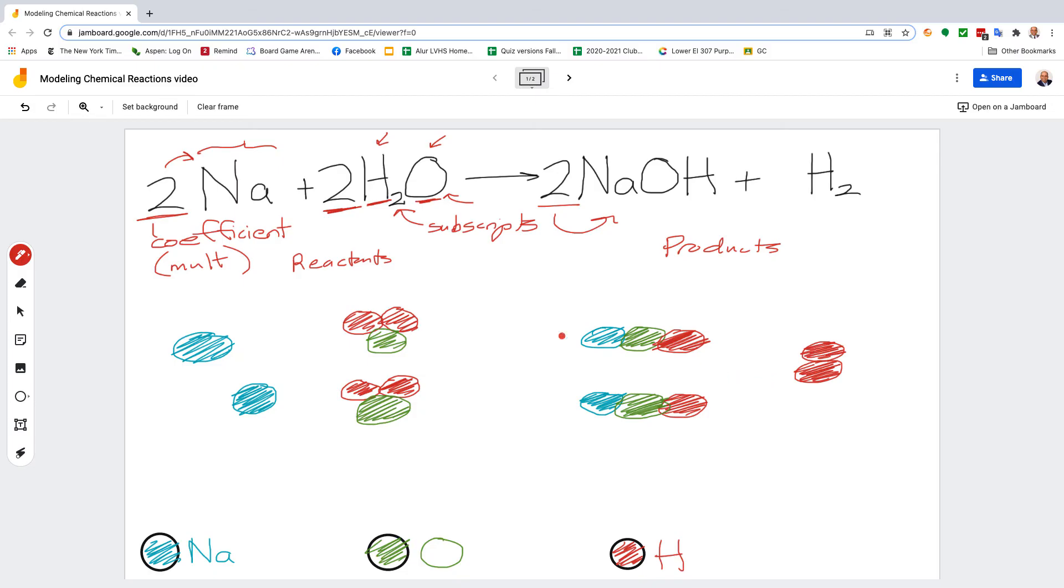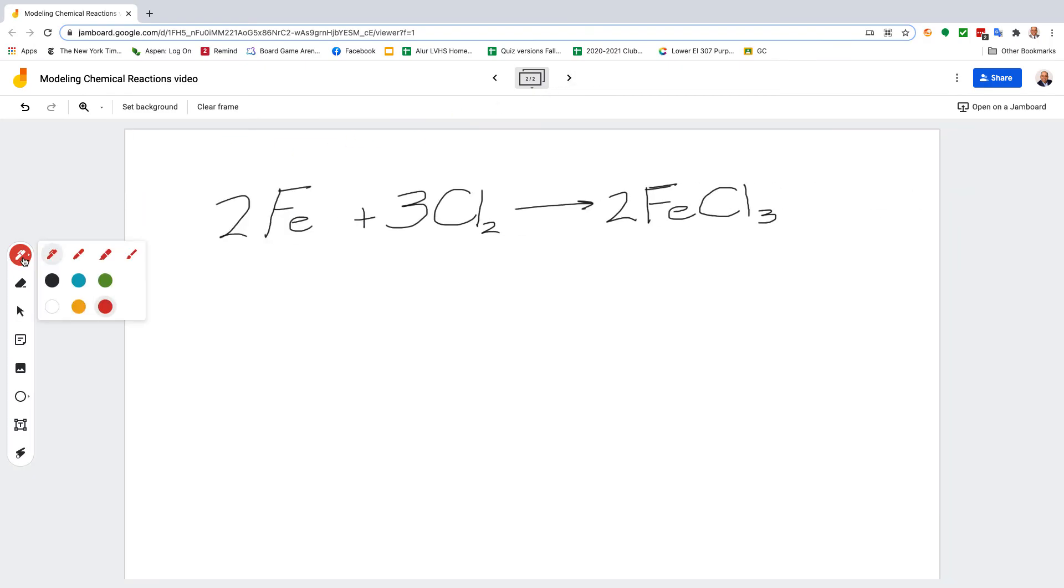So this is how you model a chemical reaction using these circle models. Let's try another one. Again, we're going to make our key here at the bottom. Notice that this is an L not an I. I's would have the serifs, these lines on the top and the bottom, to make sure that you know the difference between a capital I and a little l. So this is Cl not CI. You say that there's two Fe's.